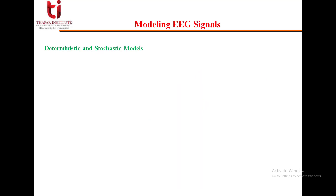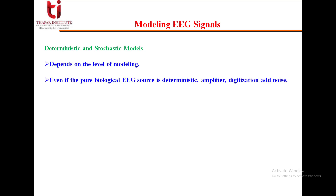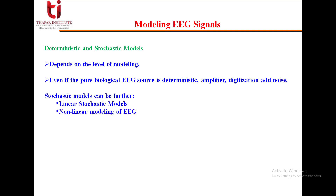Now let's begin with the modeling of EEG signals. We can have deterministic and stochastic models, and it depends upon the level of modeling. We know that the pure biological EEG source is deterministic, but the amplifier digitization adds noise that is mainly a random kind of signal. So we will mainly study the stochastic models.